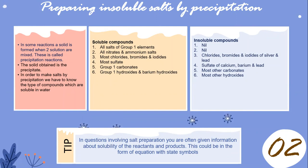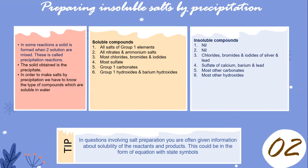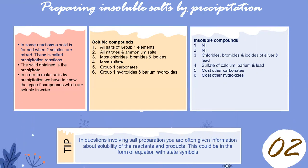In some reactions, a solid is formed when two solutions are mixed — this is called a precipitation reaction, and the solid obtained is called the precipitate. In order to prepare a salt by precipitation, you need to know which types of compounds are soluble in water.